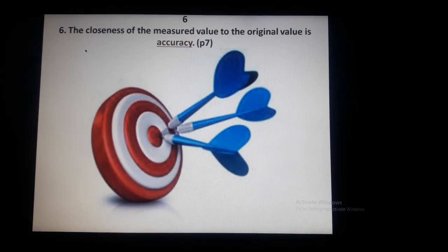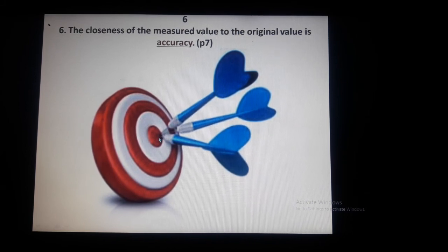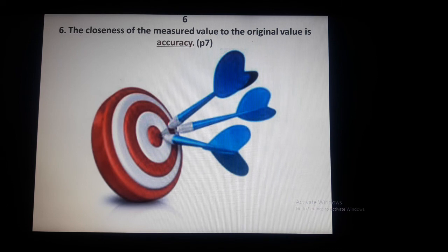Closeness of a measured value to the original actual value is called accuracy. For example, if the actual answer is 10.5 and you get 10.49, that is very close to the original value. That closeness to the actual value is called accuracy.